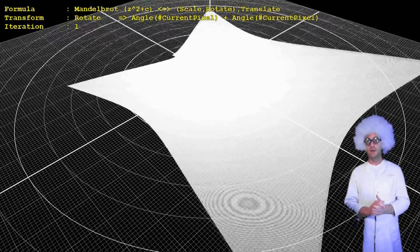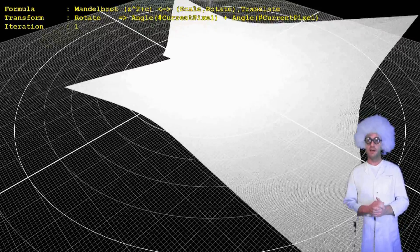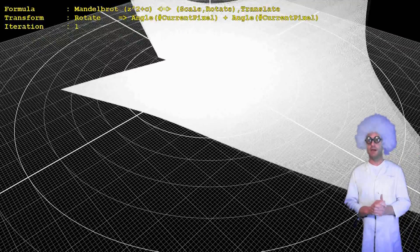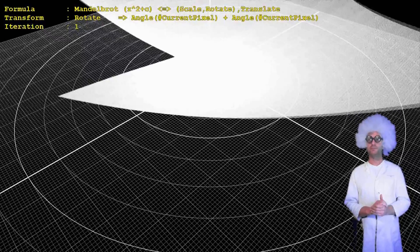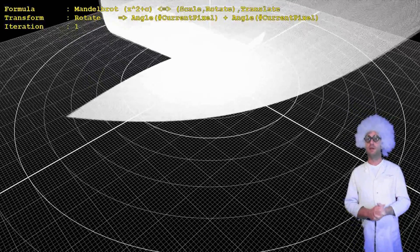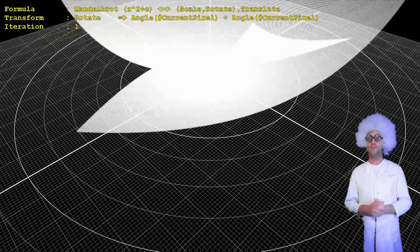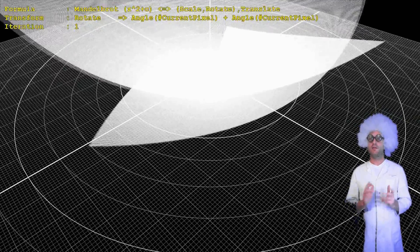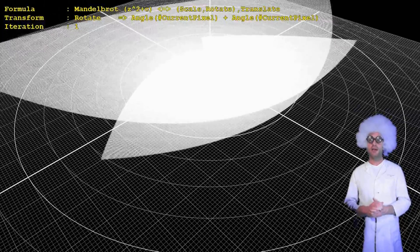Now the rotation becomes visible for the first time. All angles become doubled. Points on the positive x-axis do not move at all because the angle is zero. Points on the negative x-axis move by 180 degrees.